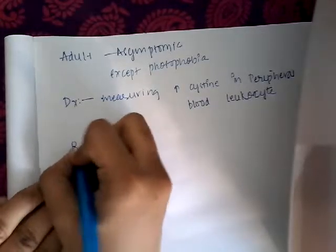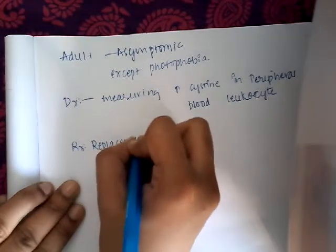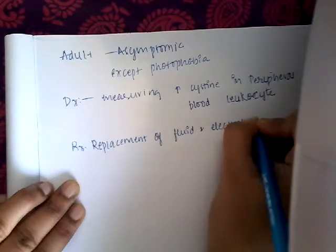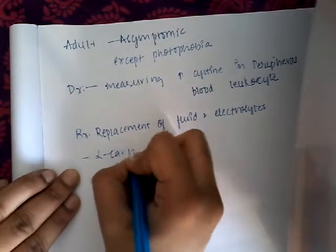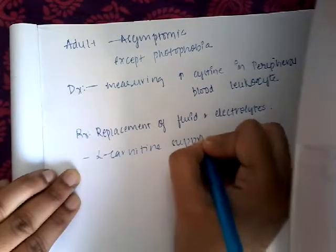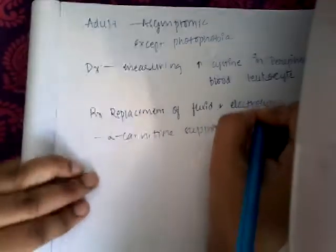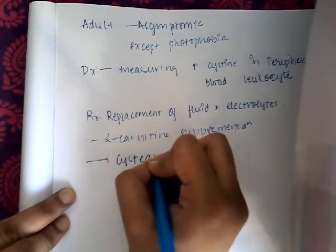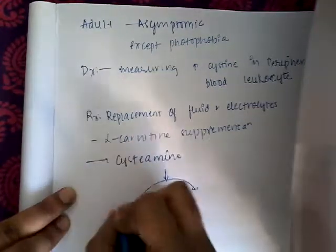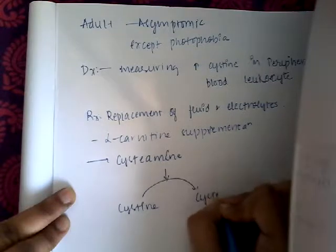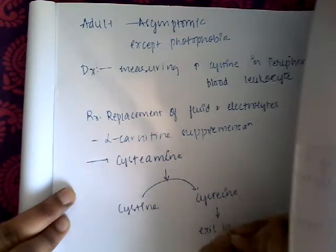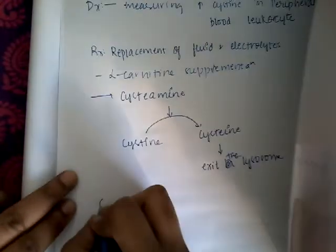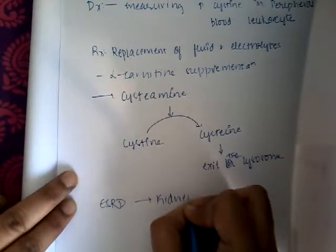Treatment includes replacement of fluids and electrolytes, and L-carnitine supplementation because muscle wasting is due to carnitine deficiency. Cysteamine can be given, which converts insoluble cysteine to a form that can exit the lysosome. If end-stage renal disease develops, kidney transplantation should be done.